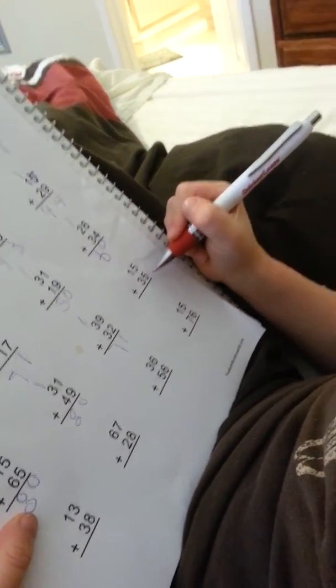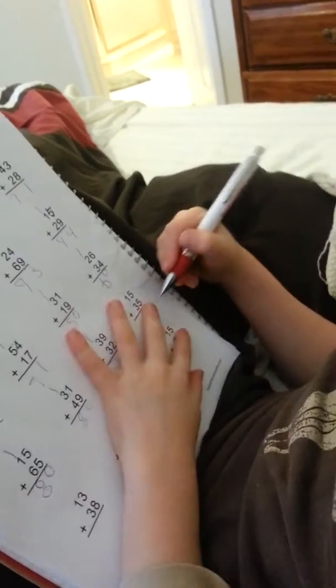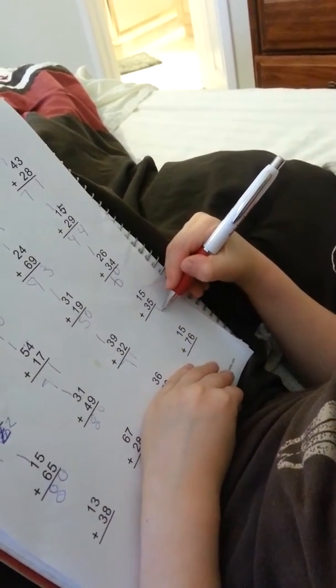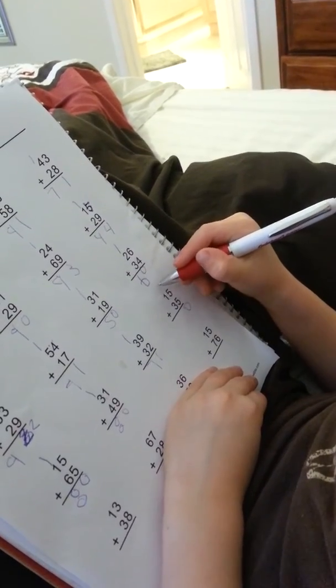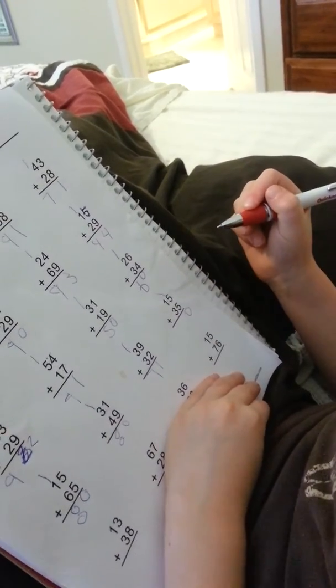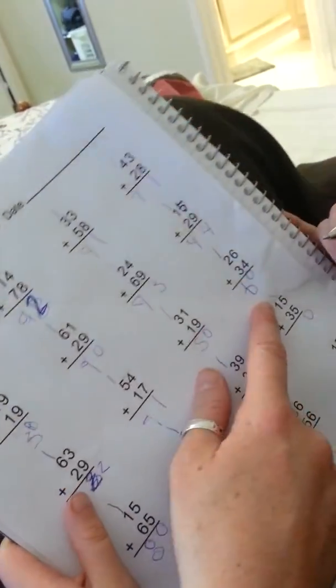15 plus 35. Okay, what's 5 plus 5? 10. Okay. Your 1 should be really on top of this 1. That's okay. Okay, 3 plus 1 plus 1.